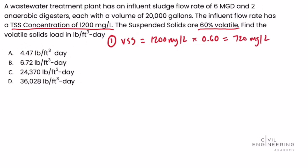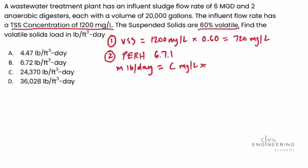In step two, we turn to the PE Reference Handbook — version 1.1 at the time of this recording — specifically section 6.7.1. There we find an equation to solve for mass in pounds per day: mass equals C, the concentration in milligrams per liter, times Q, the flow rate in MGD, times the constant 8.34.